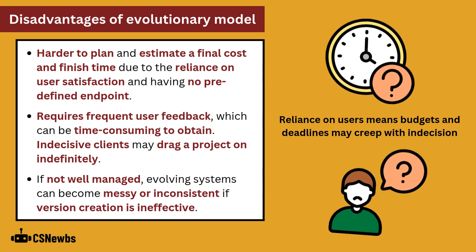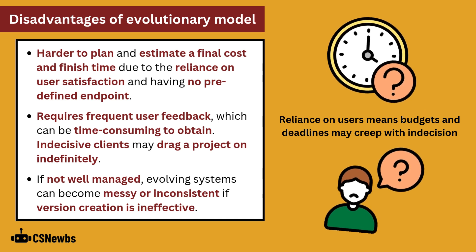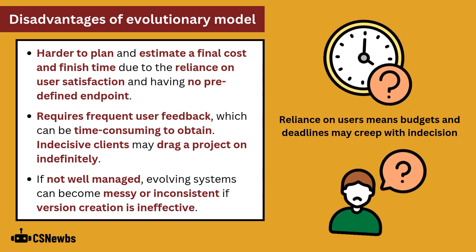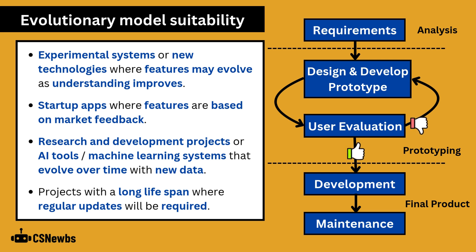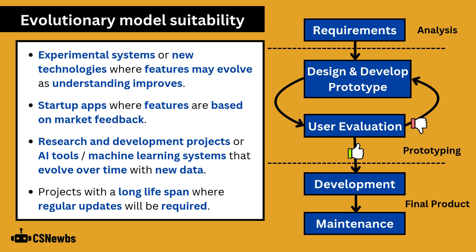And if it's not well managed, evolving systems can become messy or inconsistent if version creation is ineffective. The evolutionary model is suitable for experimental systems or new technologies where features may evolve as understanding improves. It's good for startup apps where features are based on market feedback, and for research and development projects, AI tools, and machine learning systems that evolve over time with new data.